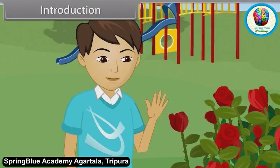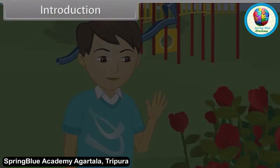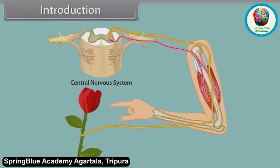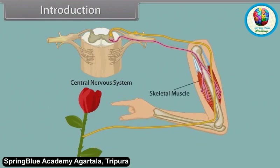Let's see more closely. When he touches the stem of the flower, the thorn on it pinches him and sensors detect stimuli present below the skin. This stimuli passes to the central nervous system and in response, the skeletal muscles contract and he withdraws his hand.